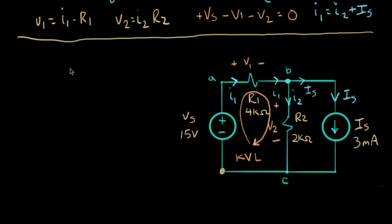In the last video, we did our circuit analysis. We set up the four equations that we needed to solve in order to figure out all the voltages and currents in our example circuit. Now we're going to solve it — this is a matter of doing the algebra to solve a set of four simultaneous equations.